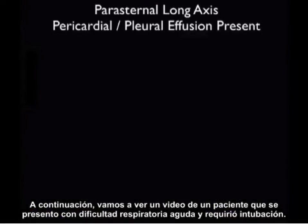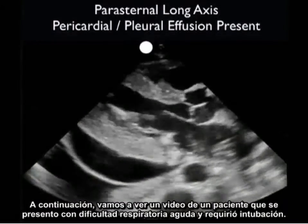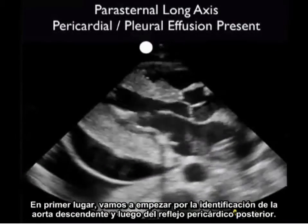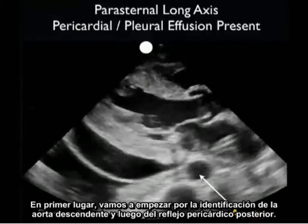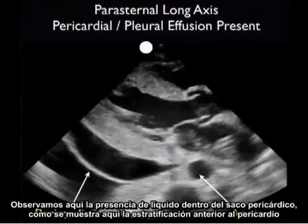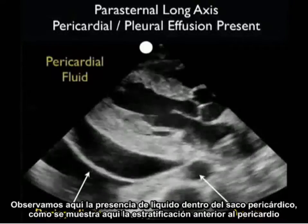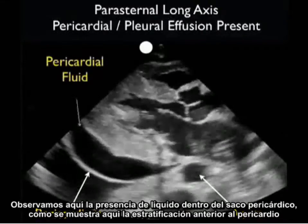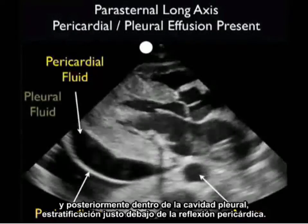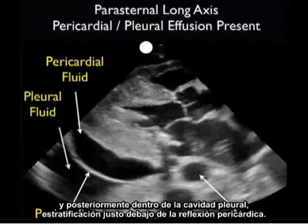Next we'll look at a video clip from a patient who presented with acute shortness of breath requiring intubation. We identify the descending aorta and then the posterior pericardial reflection. Note here the presence of fluid both within the pericardial sac — layering anterior to the pericardium — and posteriorly within the pleural cavity, layering out just below the pericardial reflection.